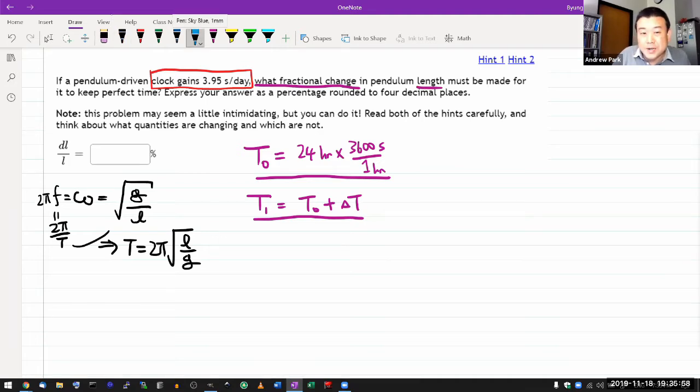So I guess the kind of intuitive assumption I'm making is that the actual period of the clock doesn't matter. Whether it's a period is one second or period is whatever number of seconds, it's only the proportionality that matters. Hopefully I'm right, right? So I can say that period T naught is equal to 2 pi times the square root of the correct length L naught over G.